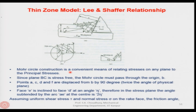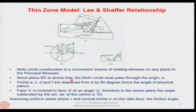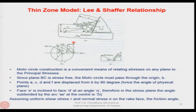If we have this, Mohr's circle construction — which you are all familiar with — is a convenient means of relating stresses on any plane to the principal stress. The Mohr's circle center is placed on the normal stress axis and perpendicular to that is the shear stress. Since plane BC is stress-free, the Mohr's circle must pass through the origin B. As you can see, if BC is a stress-free surface, the stress state is represented at a point on the periphery — zero normal stress and zero shear stress.